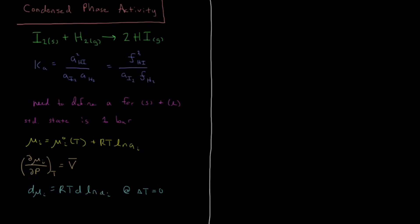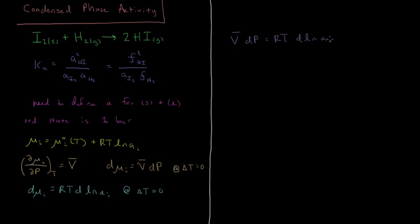We also have dμ/dP equals V̄, so at constant temperature the total derivative of μ is V̄ dP. Putting these two expressions together — we have dμᵢ on both sides — we get V̄ dP equals RT d(ln a).